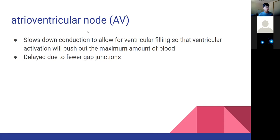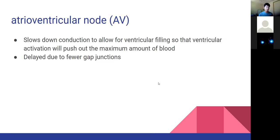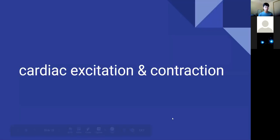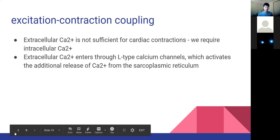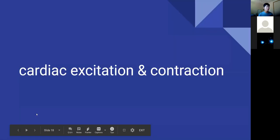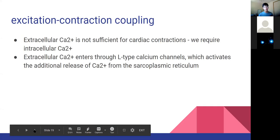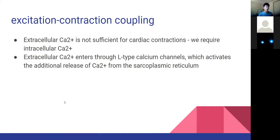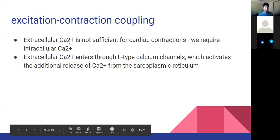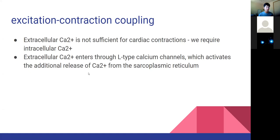The atrioventricular node will slow down conduction to allow blood to enter the ventricles. In terms of muscle contraction, the key point is that you need calcium from outside the cell but also calcium from inside the cell - this intracellular calcium is crucial for heart contractions. This is why we use calcium channel blockers.